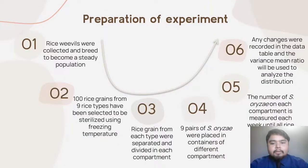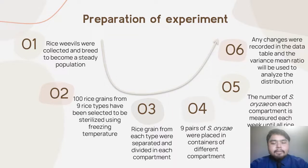For the preparation of the experiment, rice weevils were collected and bred to become a steady population. Next, 100 rice grains from nine rice types were selected and sterilized using freezing temperature. Then, rice grains from each type were separated and divided into each compartment. After that, nine pairs of Sitophilus oryzae were placed in containers with different compartments. The number of Sitophilus oryzae in each compartment was measured until all rice was consumed. Any changes were recorded in a data table, and the variance mean ratio was used to analyze the distribution.